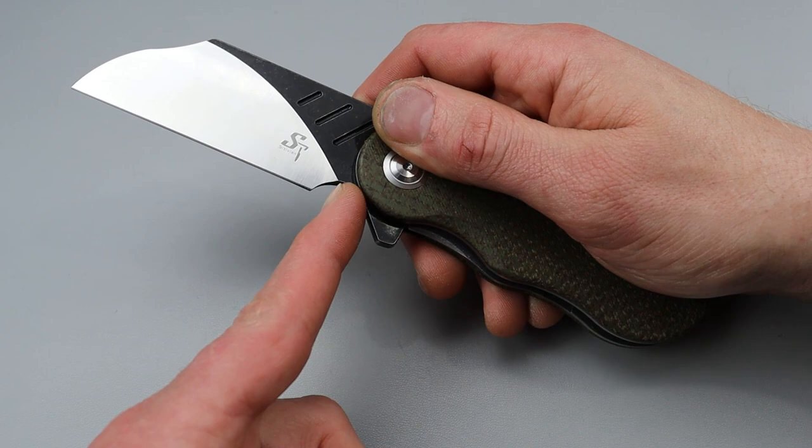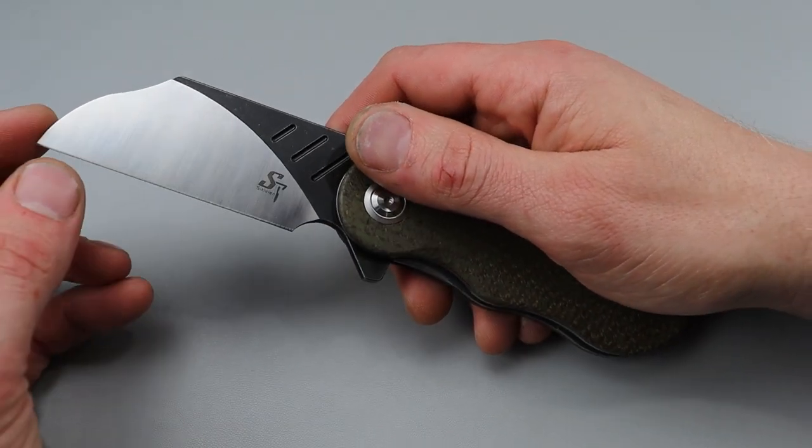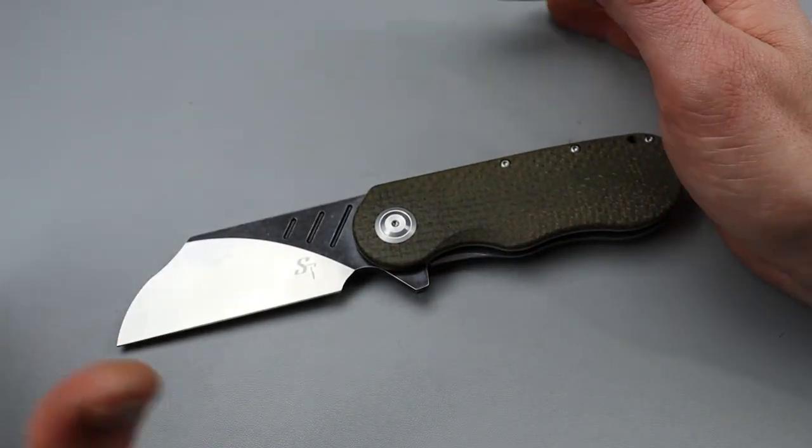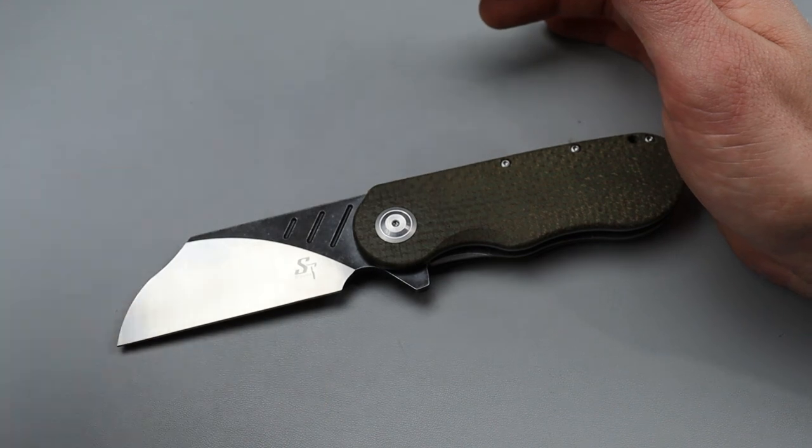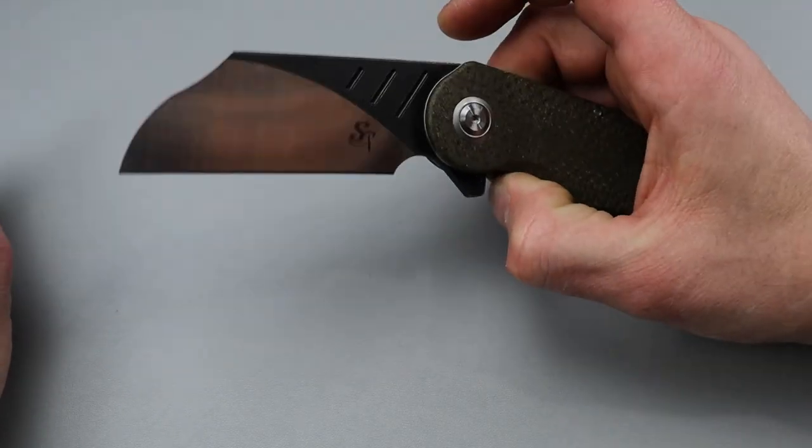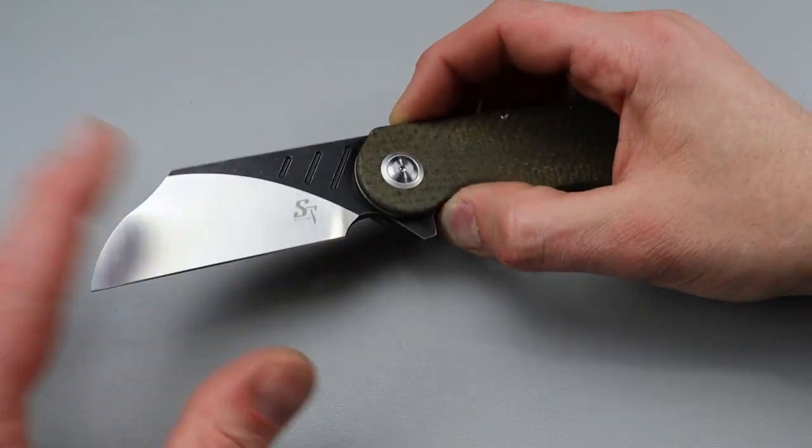The plunge grind tapers - it starts here and tapers basically to the edge. If you keep the same angle that's already on the knife when you sharpen it, it'll probably be fine. You probably won't even notice anything.